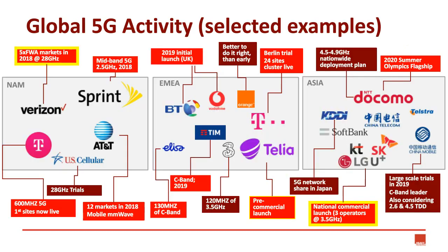Here's a chart showing some selected activity around the world across three different regions. Those boxes in bright red are operators that have committed to a public deployment date. Those outlined in yellow are operators that have already gone live — obviously there's the Verizon example. In the US, we're expecting AT&T in 12 markets more or less any day now, still committing to that in 2018. T-Mobile's talked about its 600 MHz spectrum, and Sprint has a great plan there in mid-band as well. So the US is very competitive and moving. There's also tons happening in Europe, particularly in the UK.